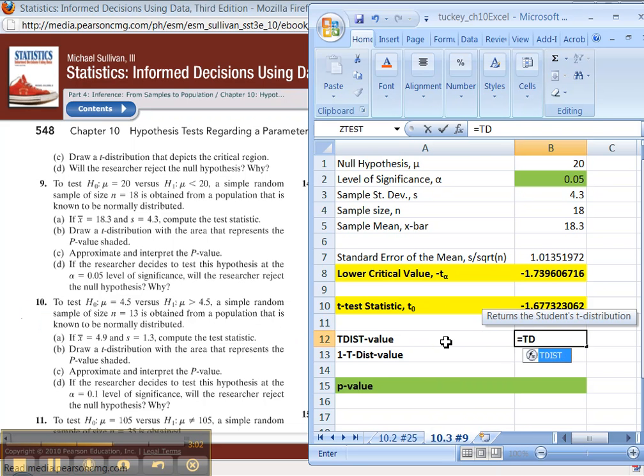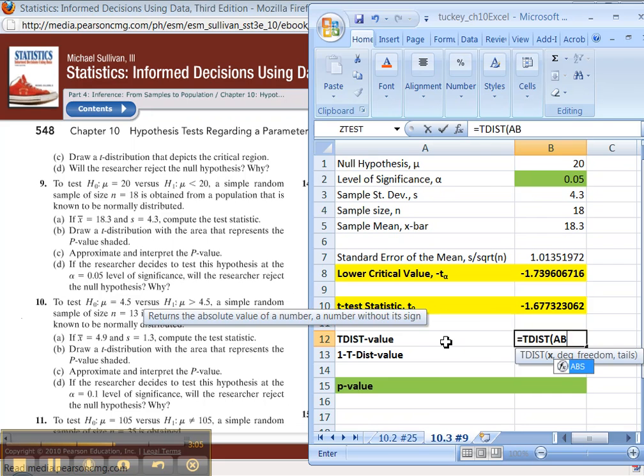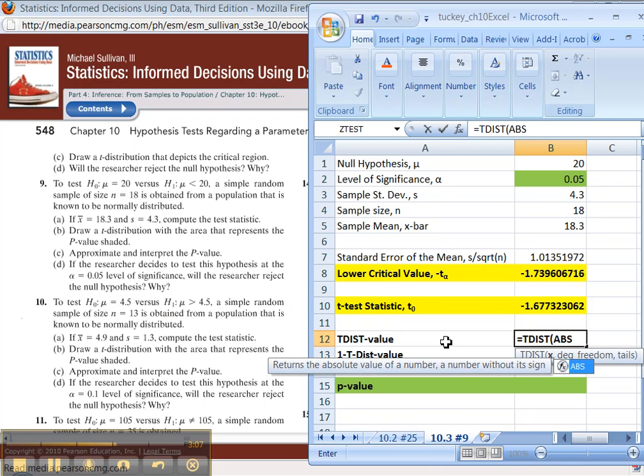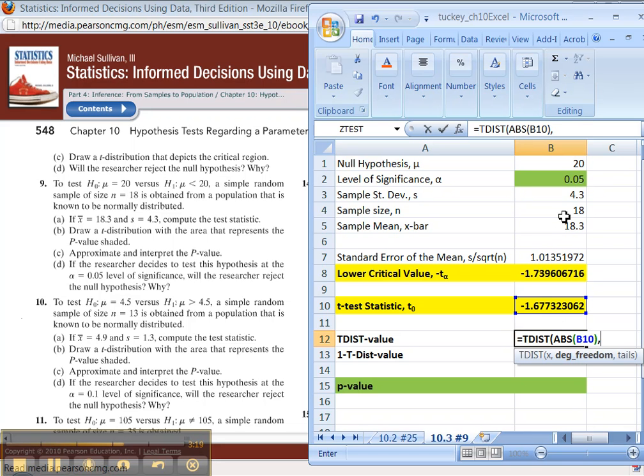Alright, t-dist. T equals t-dist. There it is. But you have to take the absolute value, abs, of this test statistic right here. Okay? It can't take negatives. T-distribution has to have positives. So you take the absolute value, comma, degrees of freedom. It hasn't changed. It's still 18 minus 1. N minus 1. Now tails. If it's a one-tailed test, you type a 1. If it's a two-tailed test, you type a 2. Since this is a one-tailed, you can see it's a less than. That's a one-tailed type 1. The not equal to ones are the two-tailed tests.